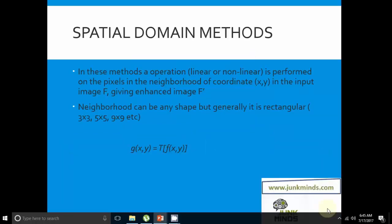Spatial Domain methods are procedures that operate directly on pixels. Mathematically, it can be represented as G(x,y) = T[F(x,y)], where F(x,y) is the input image, G(x,y) is the processed image, and T is an operator on F defined over some neighborhood of (x,y).